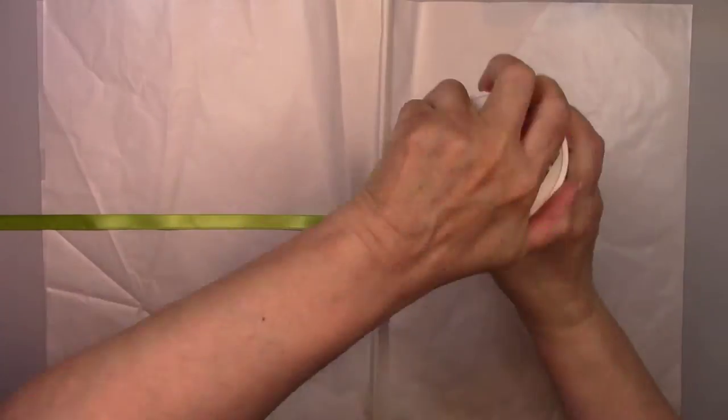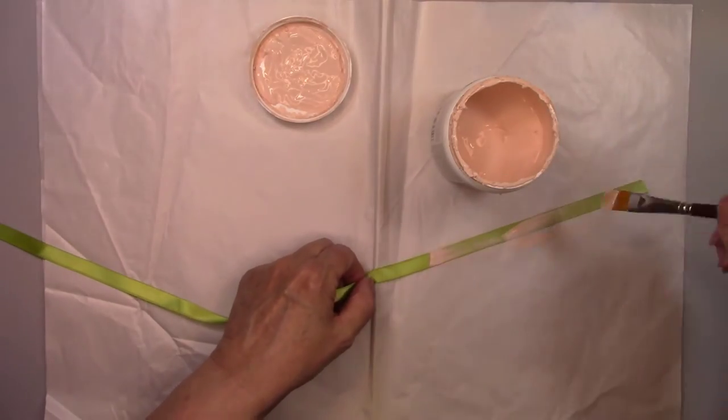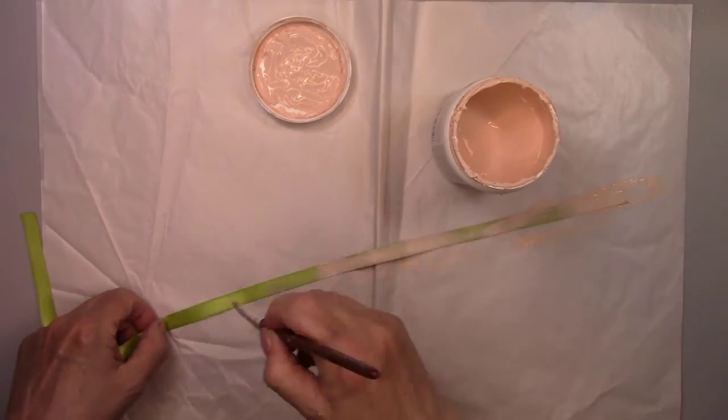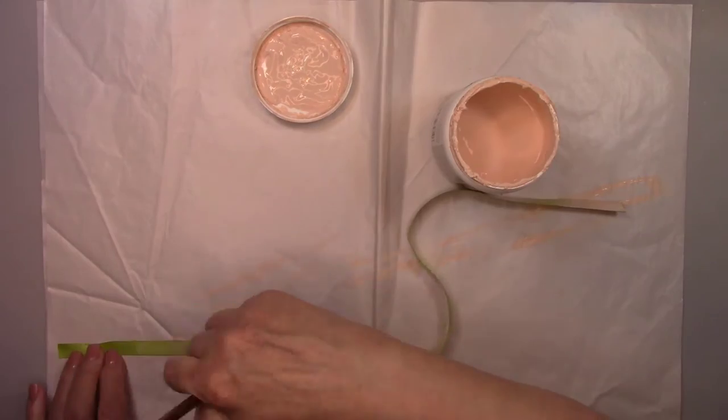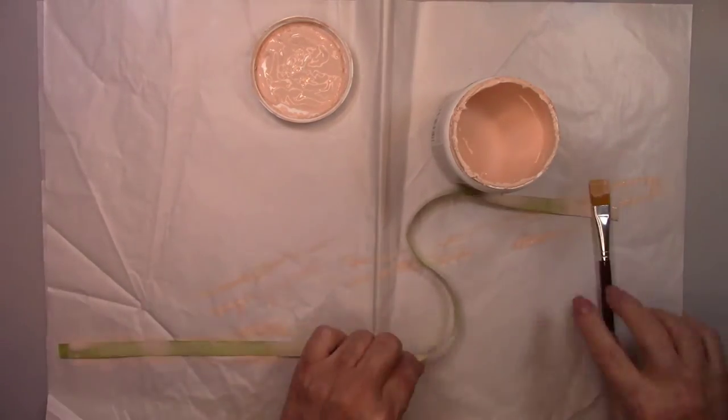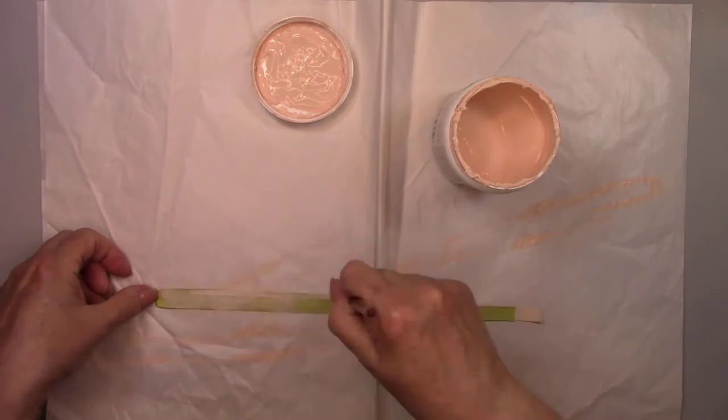And now, my friends, it is time to make a vintage bow. I cut a length of ribbon, and I'm smearing three colors of paint on it on both sides of the ribbon. I'm using the peach that I used for the background on the canvas, blue, and some vintage white.